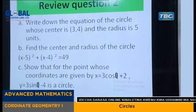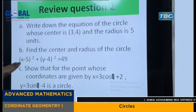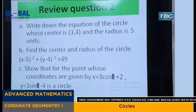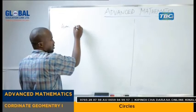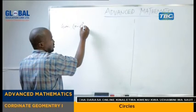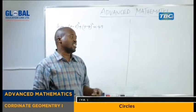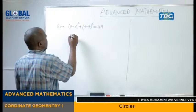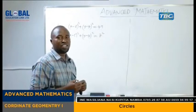Dear students, we proceed with the second equation, that is B: find the center and radius of the circle. (x minus 5) squared plus (y minus 4) squared is equal to 49. So we have given (x minus 5) squared plus (y minus 4) squared is equal to 49. That is the equation we have. So we can rearrange this equation: (x minus 5) squared plus (y minus 4) squared is equal to 7 squared, because 7 squared is equal to 49.